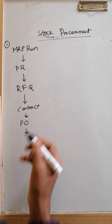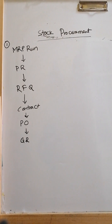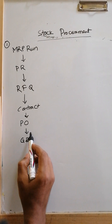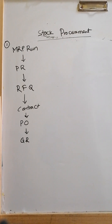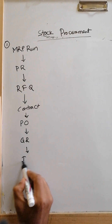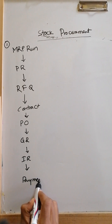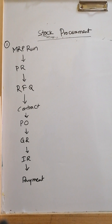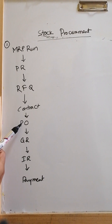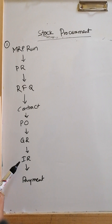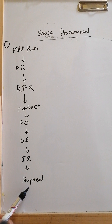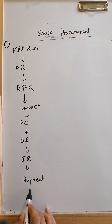When goods are received, if you are using inbound delivery there will be an inbound delivery step, but the key process is goods receipt (GR). Then invoice receipt (IR) is posted — along with the goods, the vendor sends the invoice copy, and finance posts the invoice receipt. Finally, payment is made. This completes the full Case 1 cycle: MRP run → PR → RFQ → Contract → PO → GR → IR → Payment.